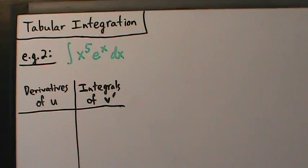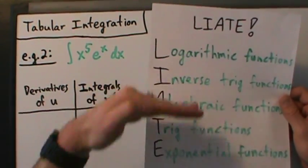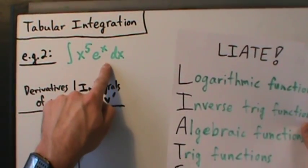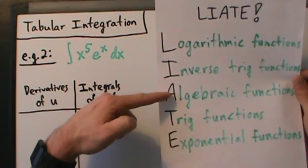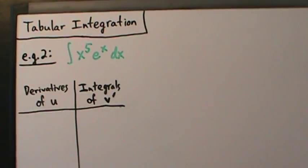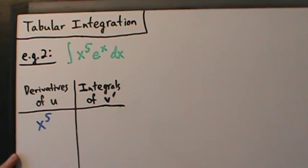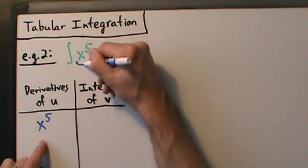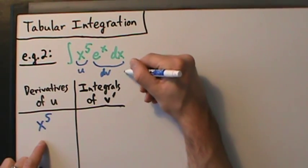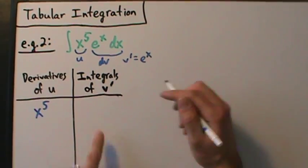We get u the same way we do for integration by parts — we go down the LIATE list and see which type of function appears first. x⁵ is an algebraic function; eˣ is an exponential function. Algebraic appears above exponential in the list, so we choose u to be x⁵. The first thing we write down is u, which is x⁵. So then dv is eˣ dx, which means v' equals eˣ.